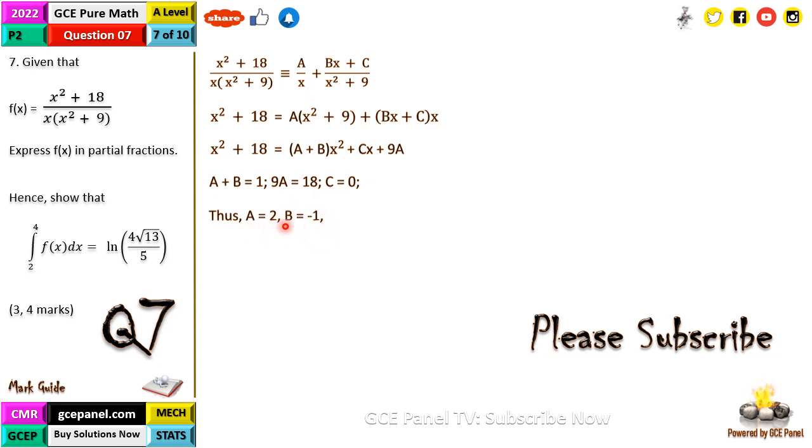From here, C is 0, A will be 18 on 9, which is 2, and if A is 2, then B should be negative 1. Therefore, f(x) can be written as being identical to 2 over x minus x on x squared plus 9. Our B is negative 1, so we have written negative 1—plus negative 1 would not make sense.